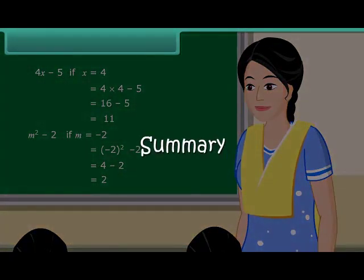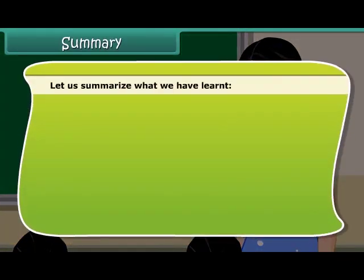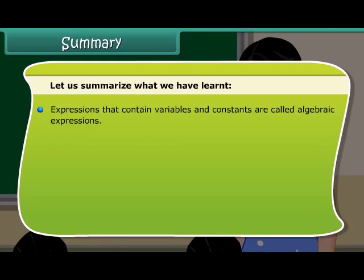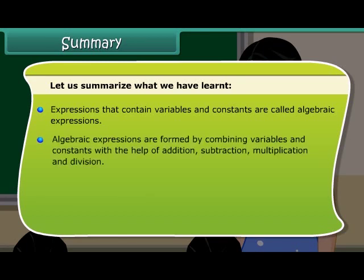Summary. Let us summarize what we have learned. Expressions that contain variables and constants are called algebraic expressions. Algebraic expressions are formed by combining variables and constants with the help of addition, subtraction, multiplication and division.